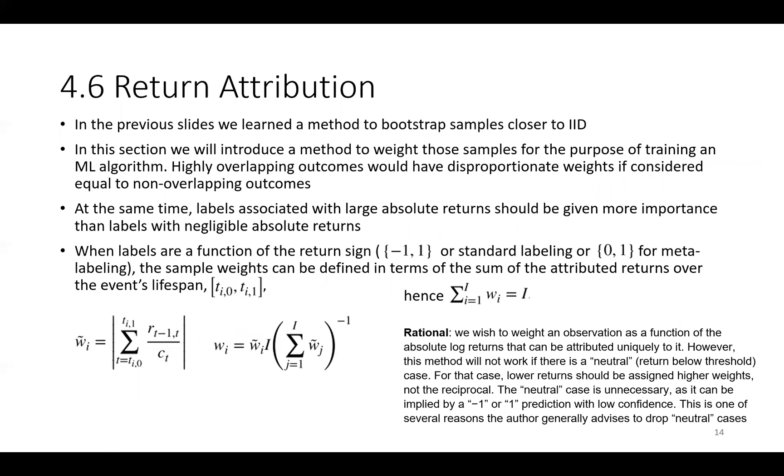We can also speak about the return attribution topic. In the previous slides, we learned that the method to bootstrap samples closer to IID. In this section, we will introduce a method to weight those samples for the purpose of training a machine learning algorithm. Highly overlapping outcomes would have disproportionate weights if considered equal to non-overlapping outcomes.